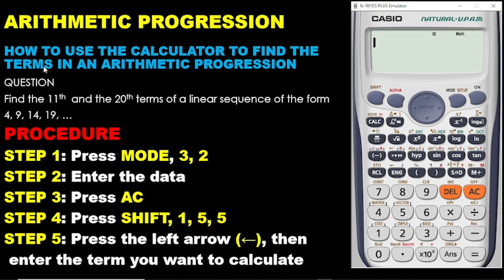We have a sample question: find the eleventh and the twentieth terms of a linear sequence of the form 4, 9, 14, 19, etc.